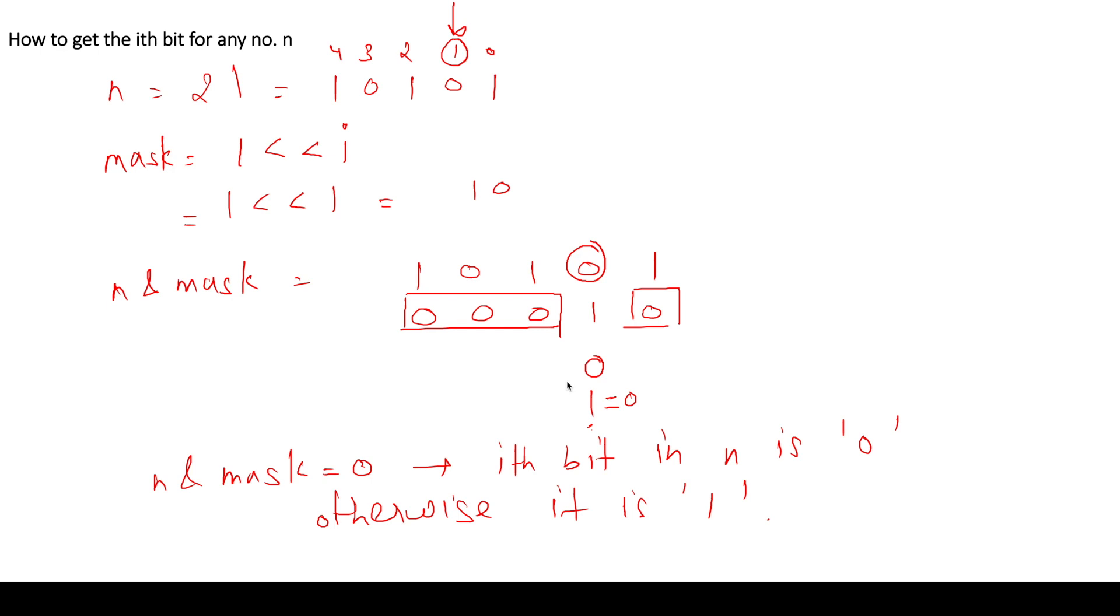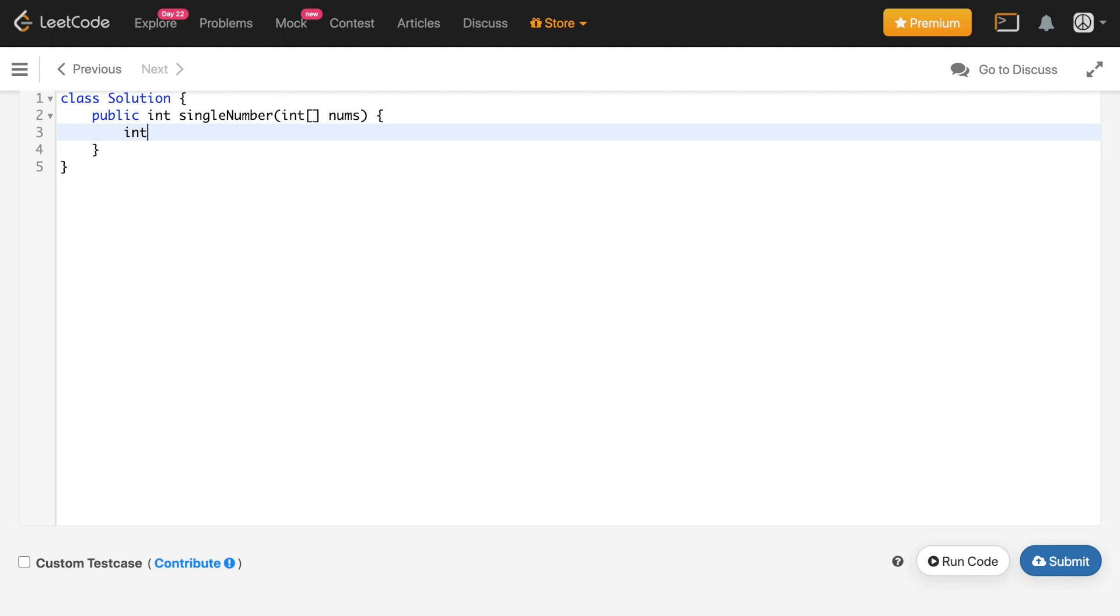So now let me add the code for this question and then things will be more clear. Okay, so now we will create a variable called result which will be initially 0 and we will have two more variables that is sum and mask.